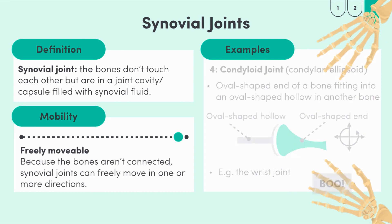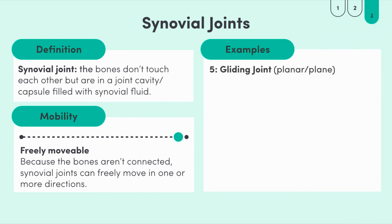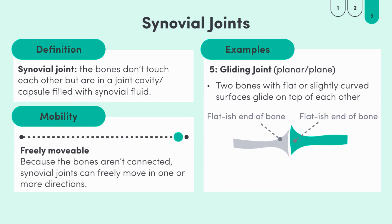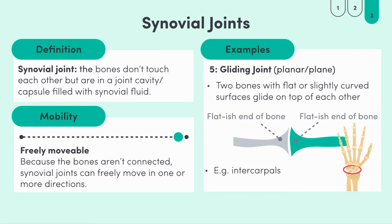Moving on to gliding joints, which also have a few other names including planar or plane joints. These are named based on their structure — the bones that meet have flat or slightly curved surfaces, so they just glide on each other. There's not a lot of movement in these joints at all. The best example is our intercarpal joints — the joints where the small bones in the palm of our hands meet. These bones don't perform specific movements but glide along each other to allow the fingers to move in all sorts of ways.